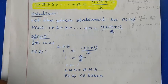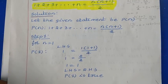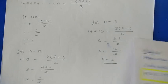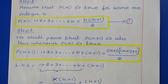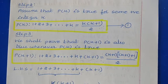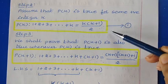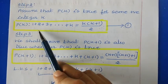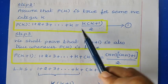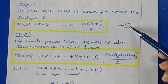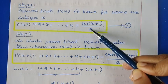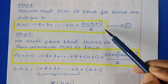In the second step, we make the assumption that for some positive integer k the given statement is true. Wherever we have n, we replace it with k. After making this assumption, we get the new statement p of k: 1 plus 2 plus 3 plus up to k is equal to k into k plus 1 divided by 2. We take this as statement 1. This is the inductive assumption.